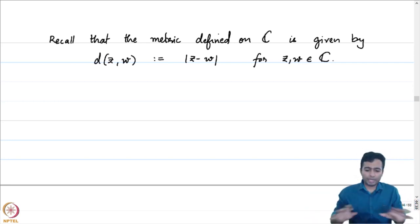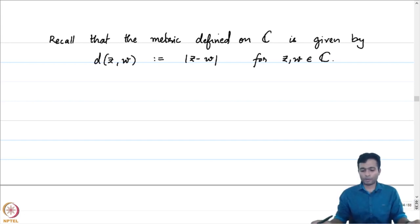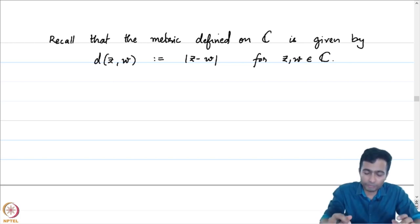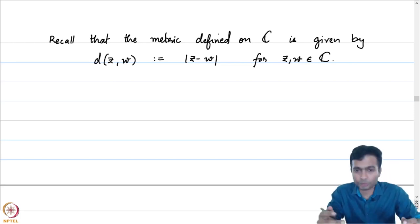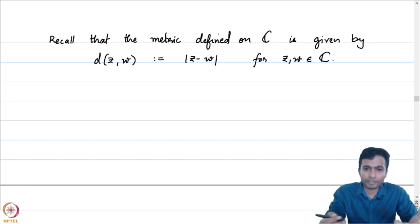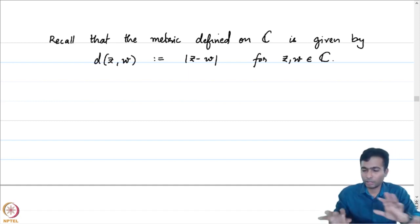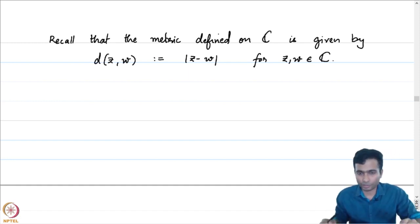In this lecture, we will do a quick recap of the familiar topological notions on the complex plane. This is material you would have already seen in a multivariate real analysis course. Nevertheless, let us do a quick recap. The intention is also to set the notations for the rest of this course.